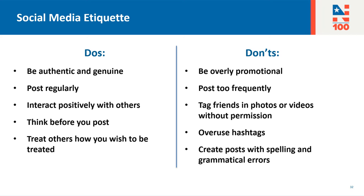And now for the don'ts. You don't want to be overly promotional — remember it's important to stay authentic and genuine. And while it's important to post regularly, you don't want to post too much, or your followers will get annoyed and simply scroll past your posts. You also never want to tag anyone in a photo or video without their permission, especially if it involves children. While it's great to use hashtags, you shouldn't overuse them — it makes them less effective. And lastly, make sure that your posts are free of any spelling or grammatical errors before you post. It's okay to make a mistake every now and then, but it shouldn't be all the time.